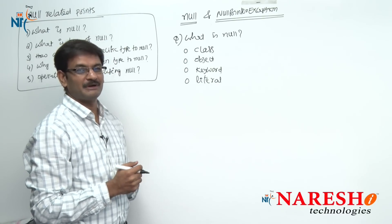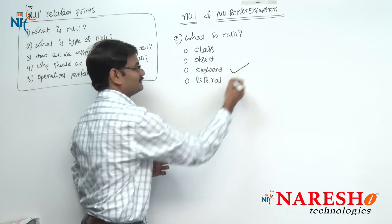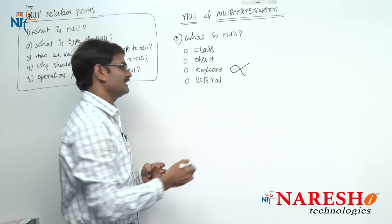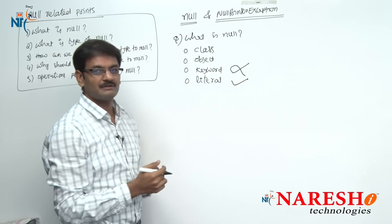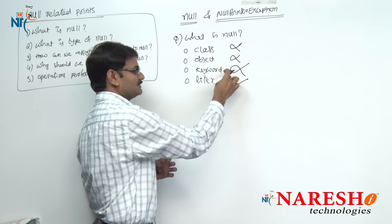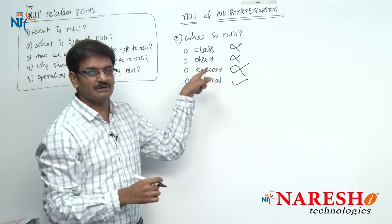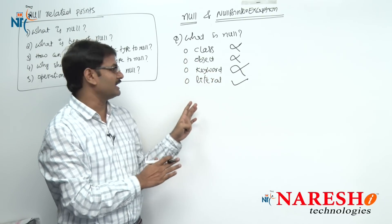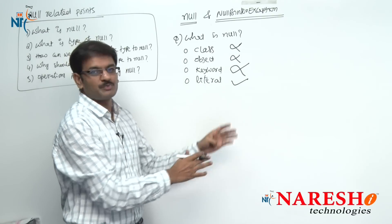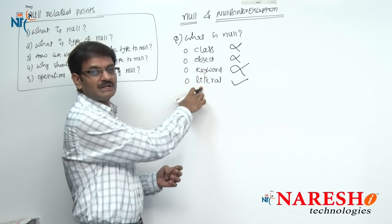Majority of people might have chosen: null is a keyword. That is wrong. Null is not a keyword. Null is a literal. Null is not a class. Null is not an object. Null is not a keyword. Null is a literal. Null looks like a keyword, but it is actually a reserved word — it is reserved in the Java language, not used by programmers, only used from a language point of view. So null cannot come under the keyword category. Null comes under the literal category.